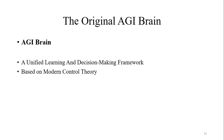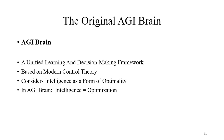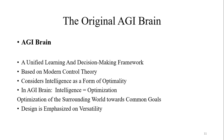I am going to describe the structure of the original AGI Brain, which was proposed in 2019 at the AGI-19 conference. AGI Brain is a unified learning and decision-making framework based on modern control theory. AGI Brain considers intelligence as a form of optimality — intelligence equals optimization of the surrounding world towards common goals. In AGI Brain, design is emphasized on versatility, with the ultimate goal of designing a general-purpose artificial brain.